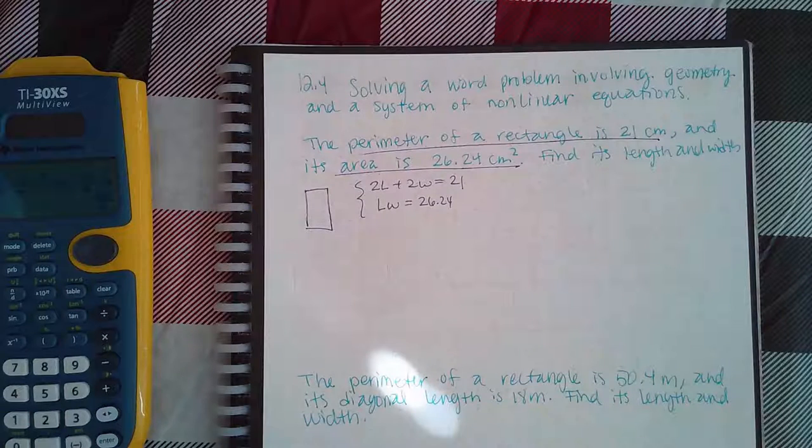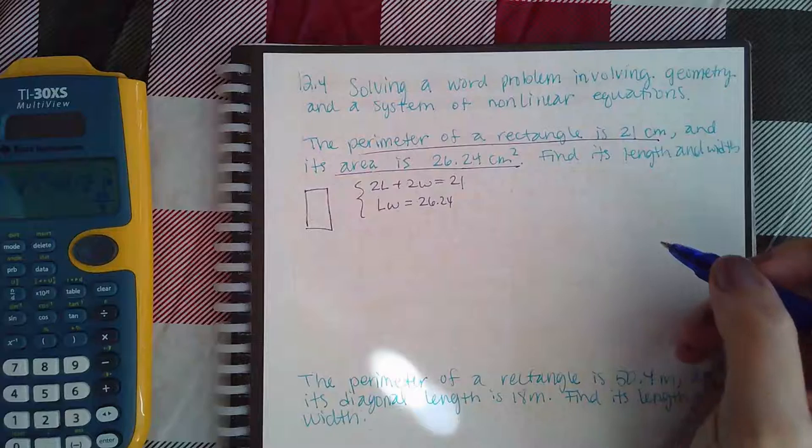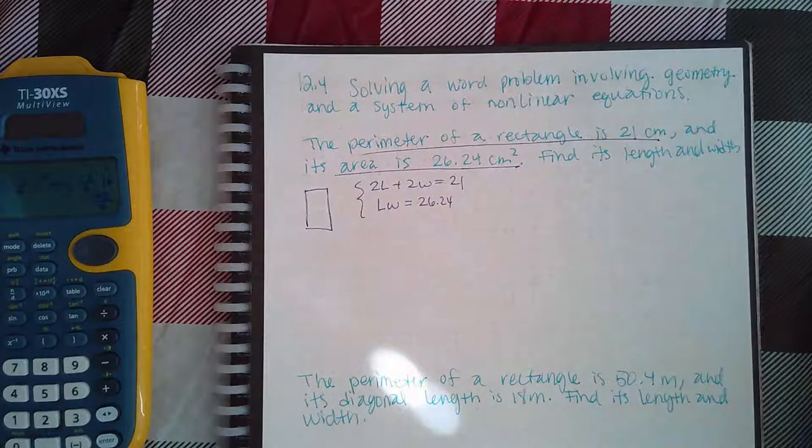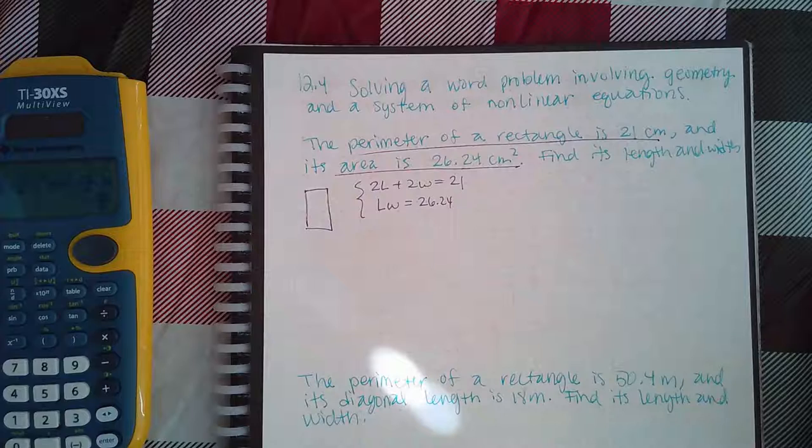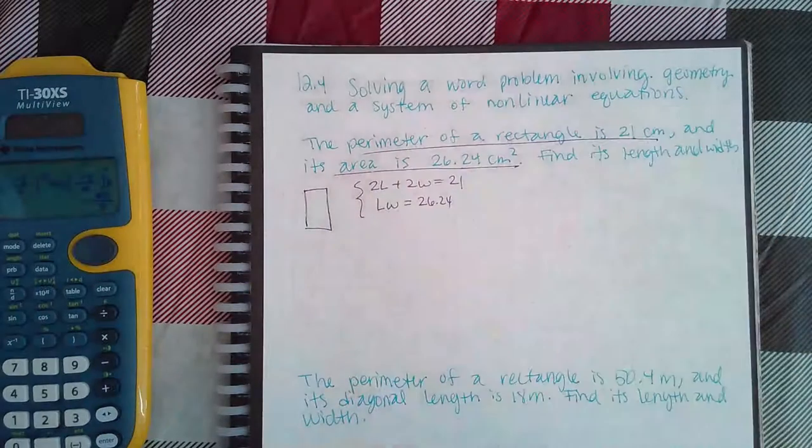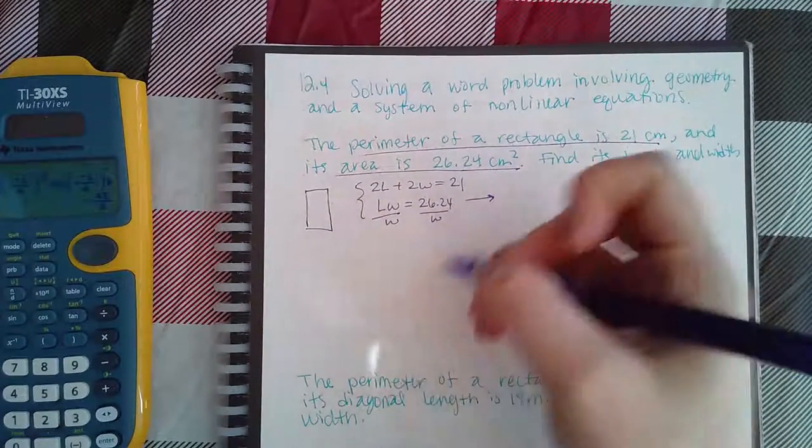We already know from the previous topic that when you have a system, just basically use substitution. You can choose which letter to substitute. I don't mind fractions early, so I'm just going to choose to take this one and divide both sides by W.